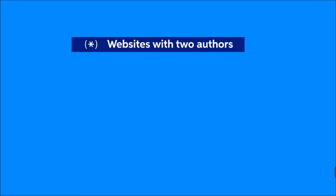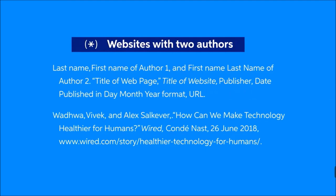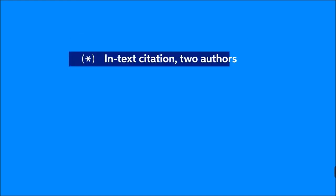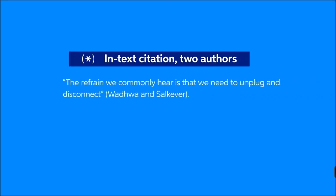For a website with two authors, place the authors' last names in the same order as the source. The first name should be formatted in reverse order, as was done for a single author. The second name, however, is written as first name, last name, and is followed by a period. The rest of the citation will follow the same structure as citations for websites with one author. The in-text citation for a website with two authors should include both authors' last names, in the same order they are listed in the source and your works cited page.